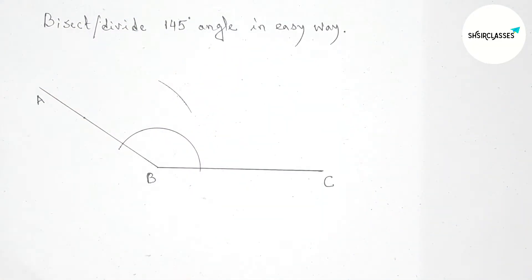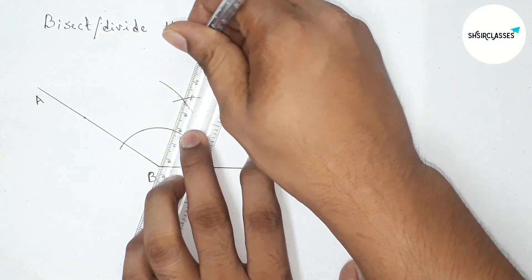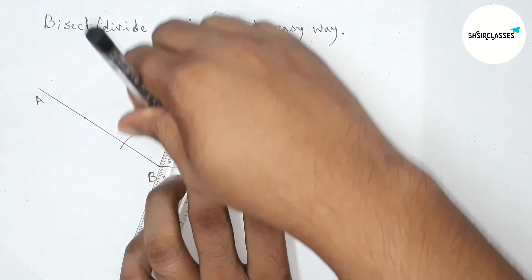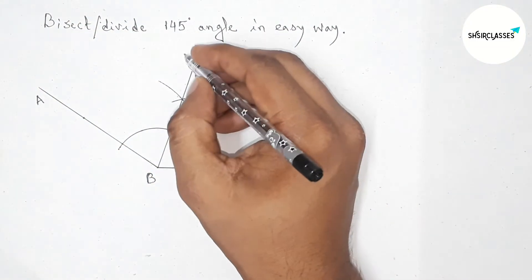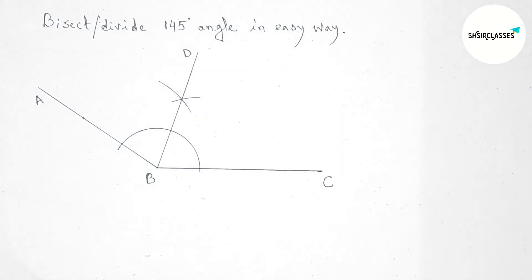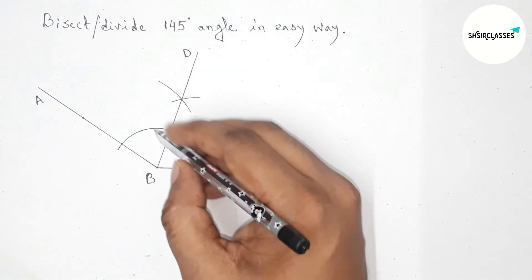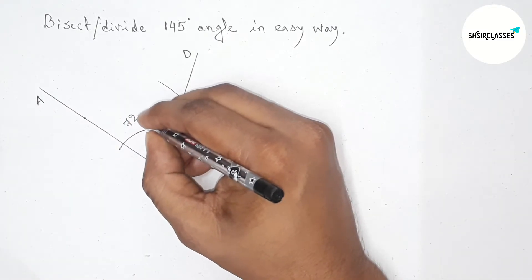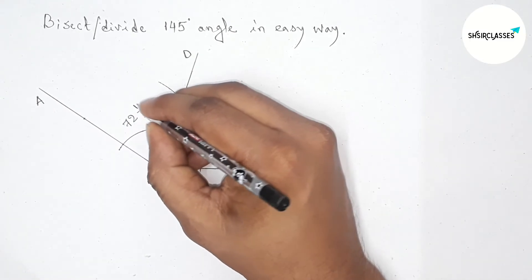Next, joining this line which bisects the angle 145. So now taking here point D. So now angle ABD, this is 72 and a half degrees, and this is 72 and a half degrees.